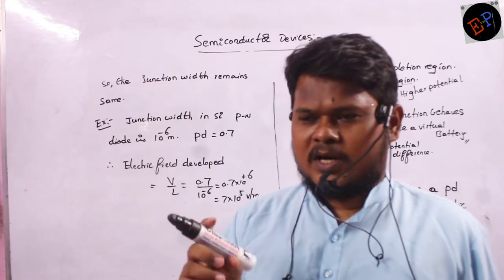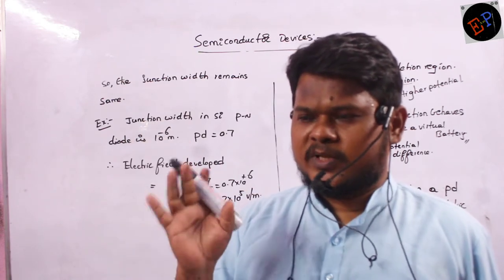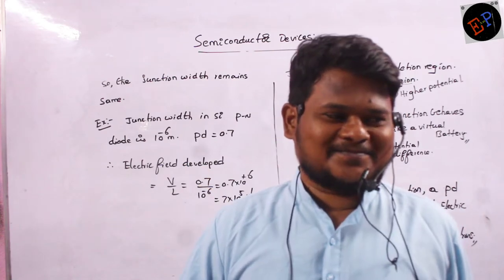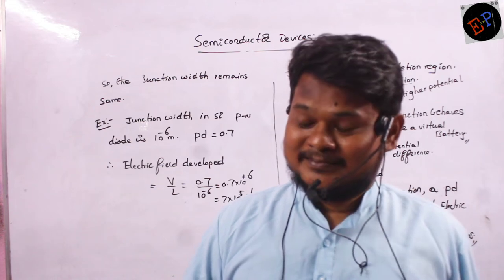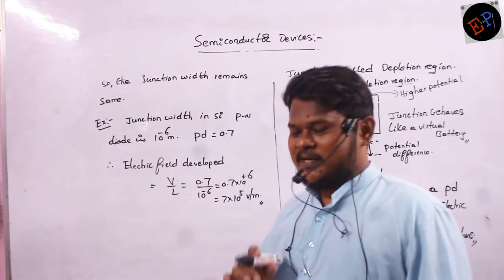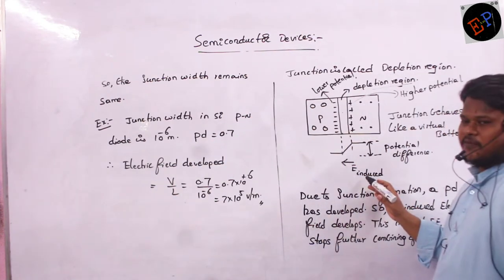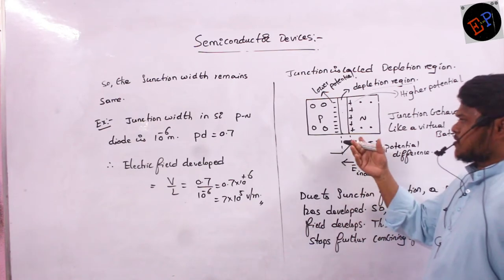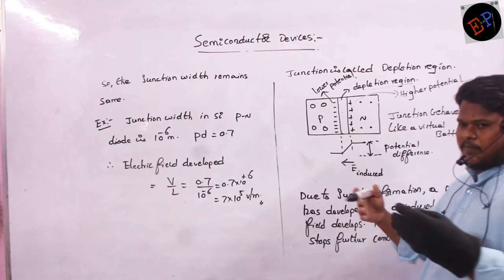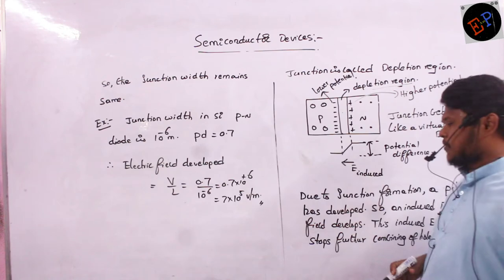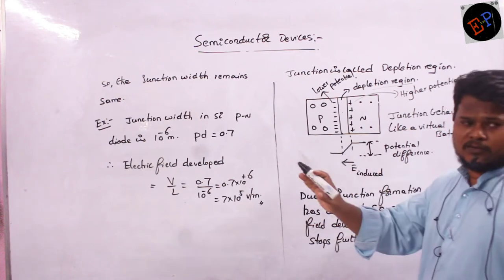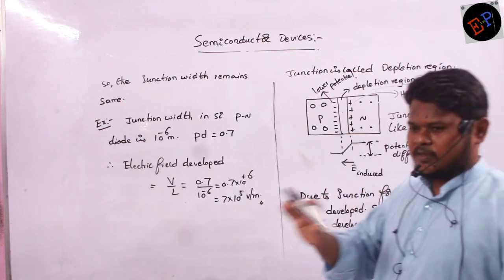How is the induced electric field able to stop recombination? What was happening: holes in P-type and electrons in N-type were recombining, and junction width was increasing. When the induced electric field reaches a certain value, it will not allow the holes and electrons to recombine.